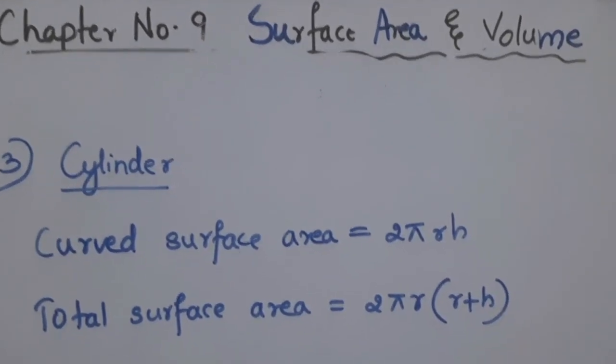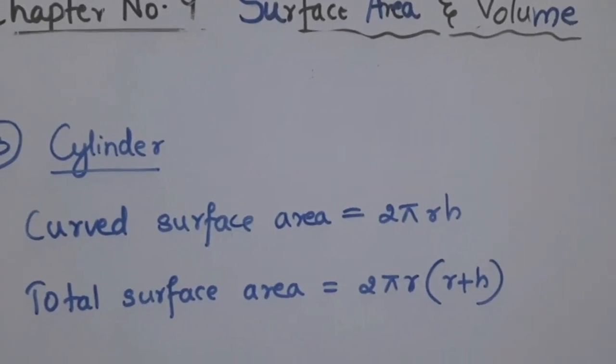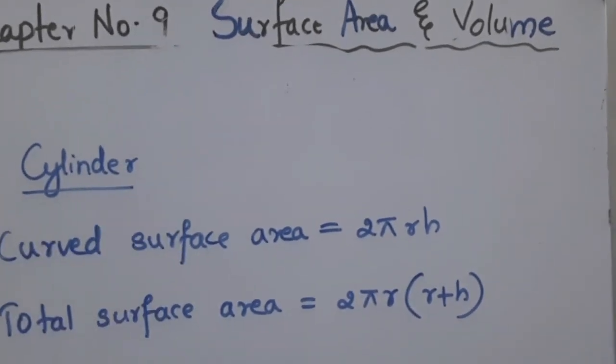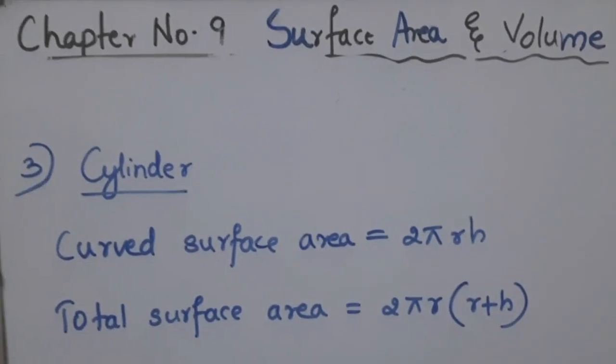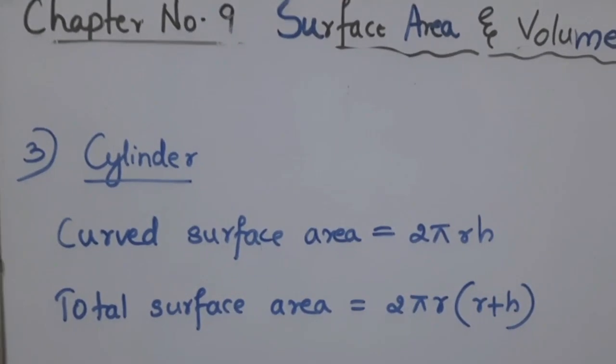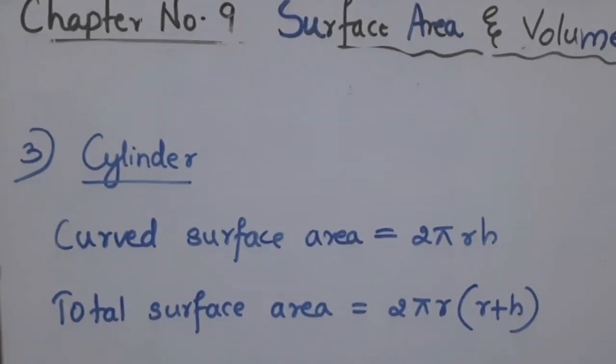Chapter 9 Surface Area and Volume. Today we have Cylinder, the third one. We have already discussed about Cone and Cuboid in last videos. In the case of Cylinder, you have two equations to learn.